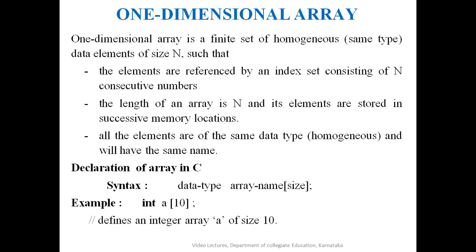A one-dimensional array is a finite set of homogeneous data elements of size n, where each element is referenced by an index value and stored in successive memory locations. In C, to declare an array, the syntax is: data_type array_name[size]. For example, int a[10] means 'a' is an array of size 10 that can store 10 integer elements. Since int is 2 bytes, 10×2 = 20 successive memory locations are reserved for the array.